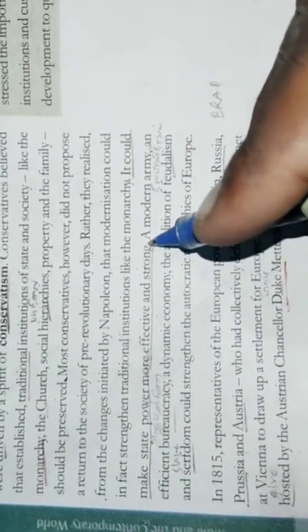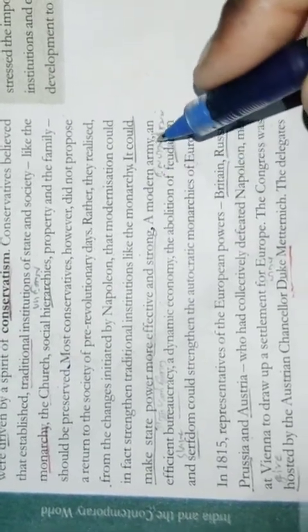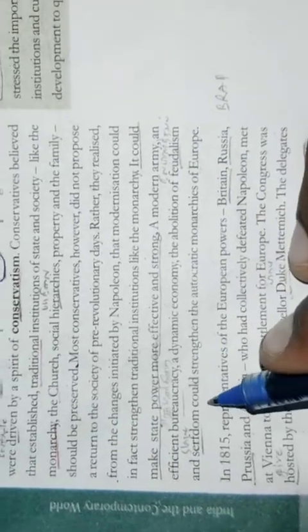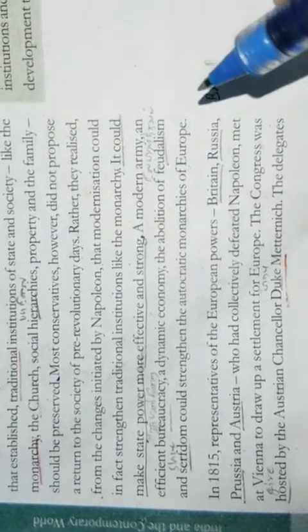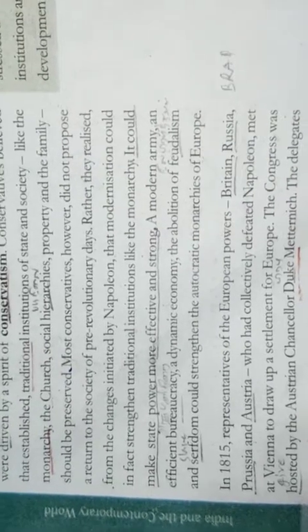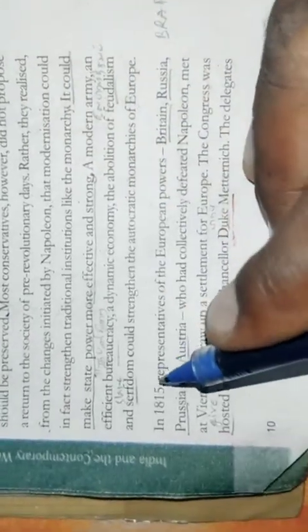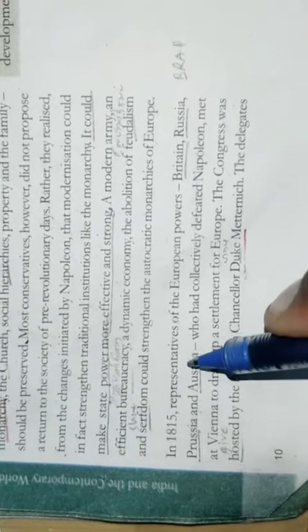After 1815, many secret societies sprang up across Europe to train revolutionaries and spread their ideas. To be a revolutionary at this time meant a commitment to oppose monarchy — the monarchical form established after the Vienna Congress — and to fight for liberty and freedom. Most of these revolutionaries also saw the creation of nation-states as a necessary part of the struggle for freedom.